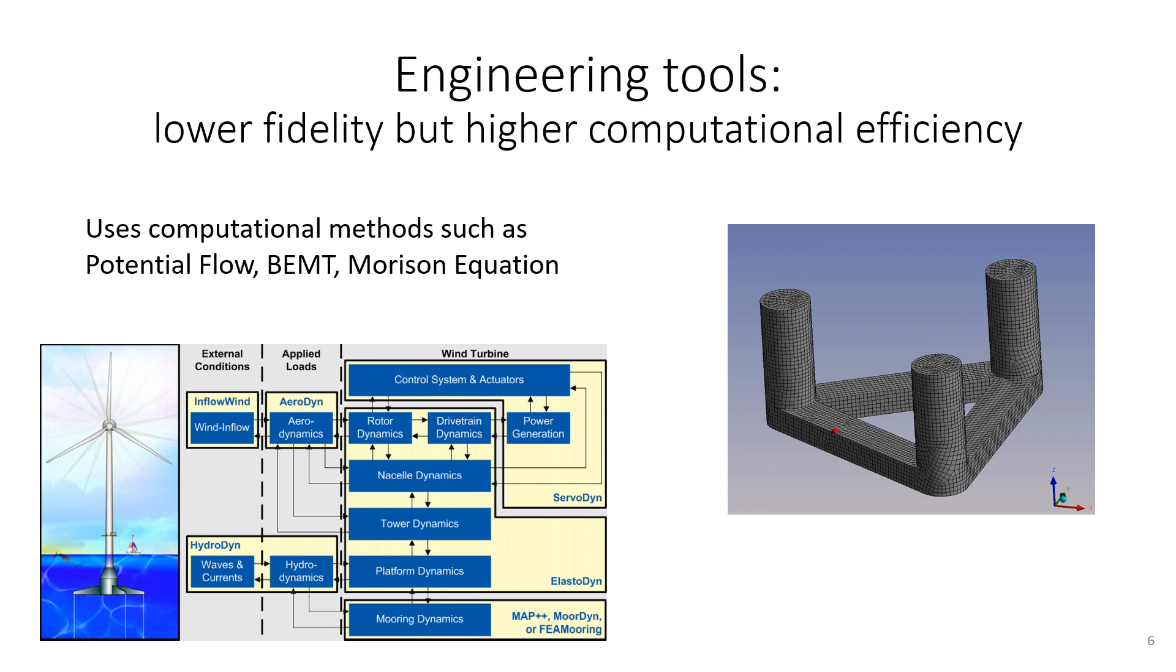For a longer time domain analysis of floating wind turbines, tools which in the literature are often referred to as engineering tools are more useful. These tools are lower fidelity yet computationally more efficient than the high fidelity tools. Well-known examples are OpenFAST, HAWC2 and SIMA. The beauty of these tools is that structure, hydrodynamics, aerodynamics and turbine control are all coupled during the simulations.